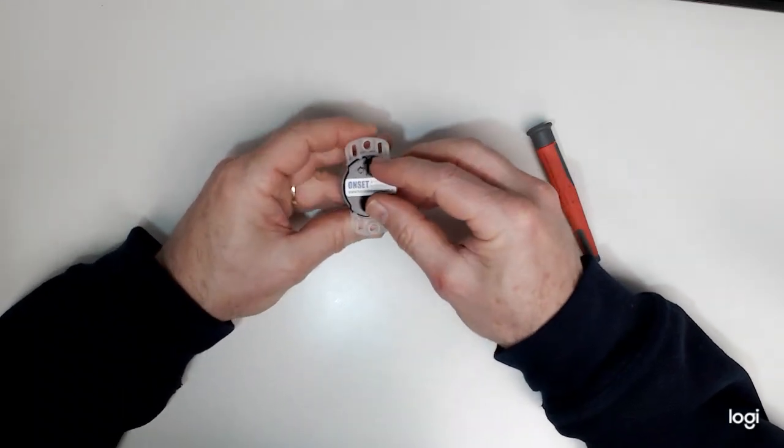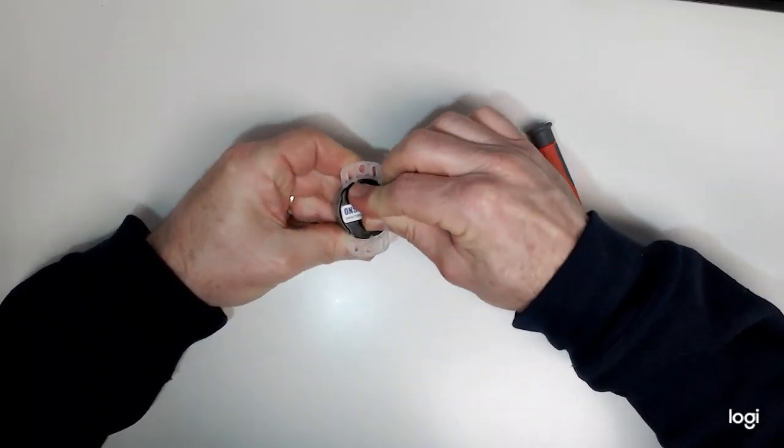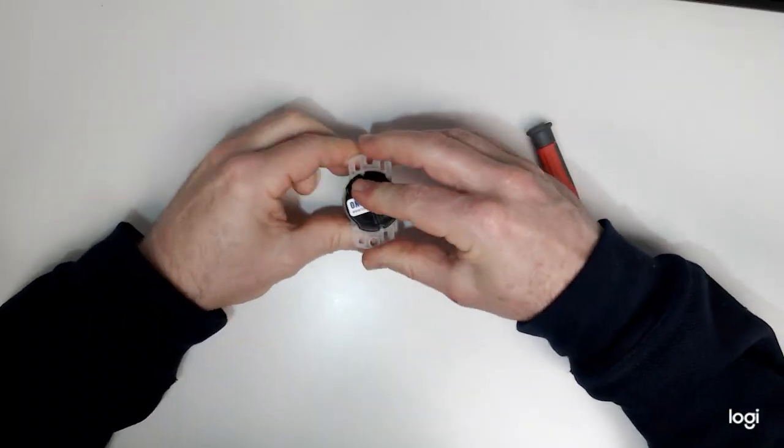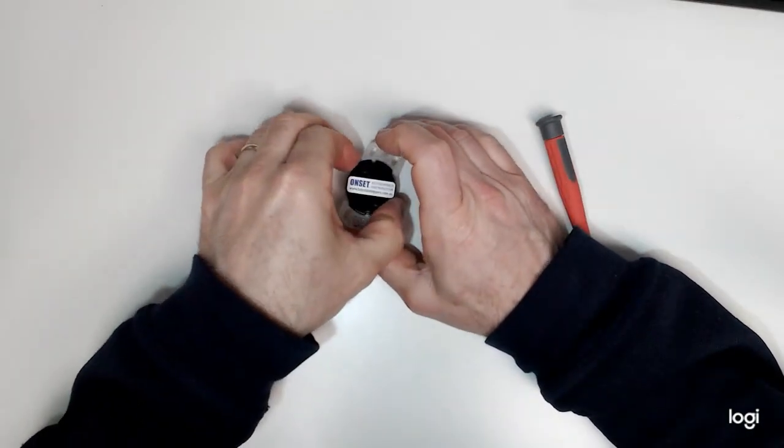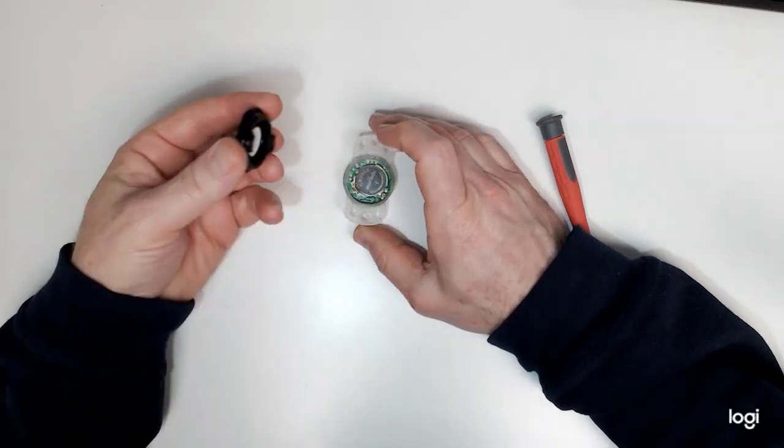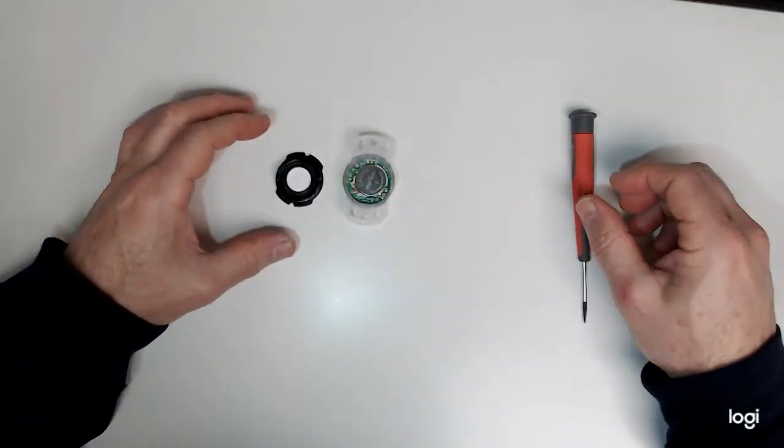Turn them over and give it a twist. That part will then lift off, showing the battery inside.